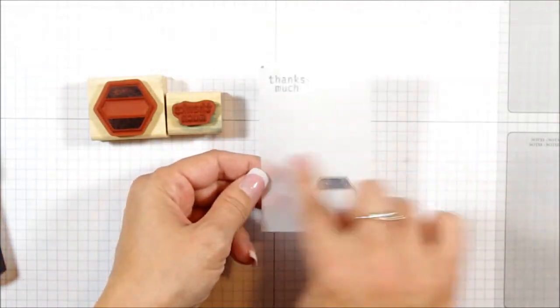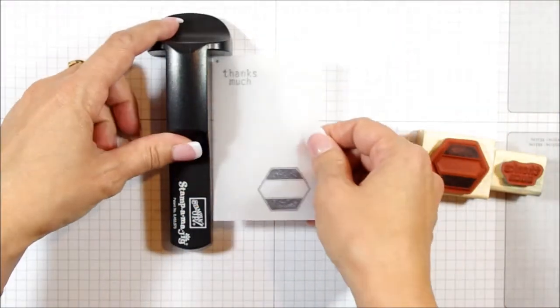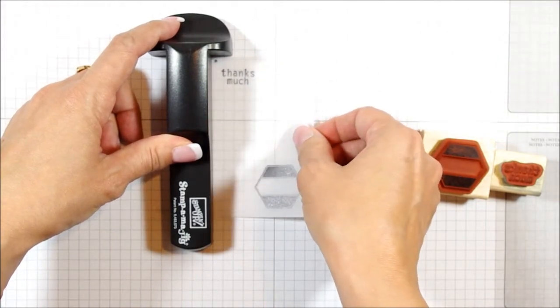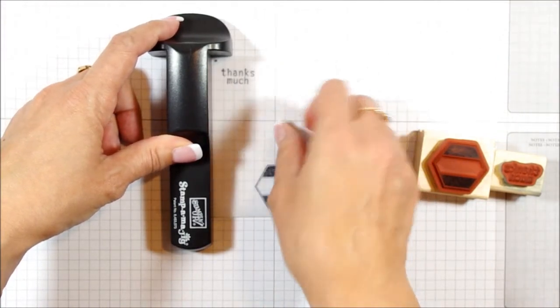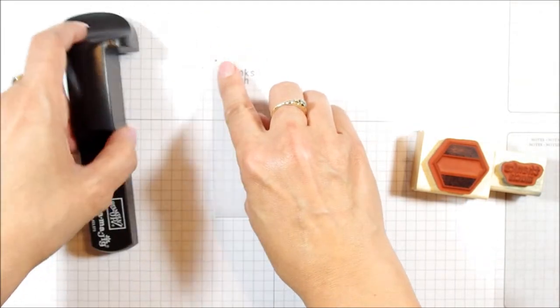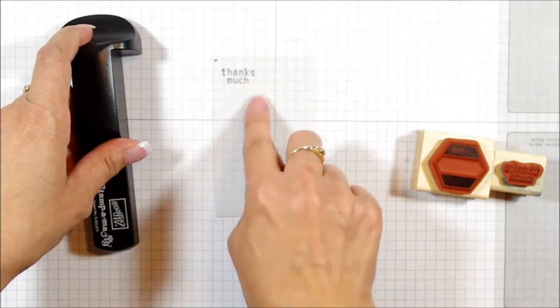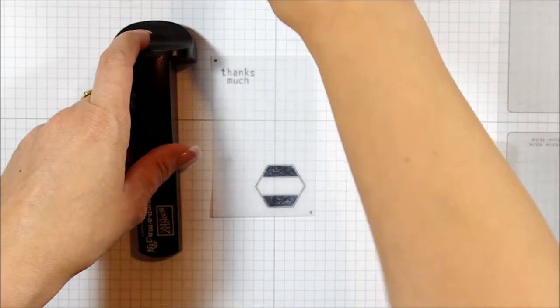So what I did is I took some vellum cardstock, and I just cut myself a little piece, and I put it into my corner just like I would have with my imaging sheet. And then I put a little dot here so that I knew that that was the spot that went into my corner. And I did the same thing. I stamped it right into there.